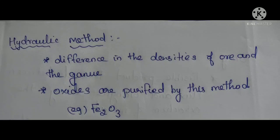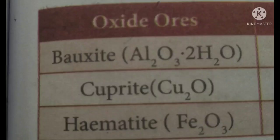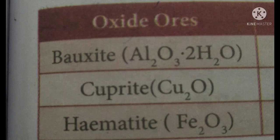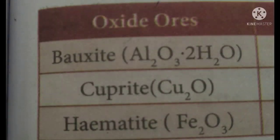This method is mainly used for oxide ores. Examples of ores concentrated by this method are bauxite (ore of aluminium), cuprite (ore of copper), and hematite (ore of iron).